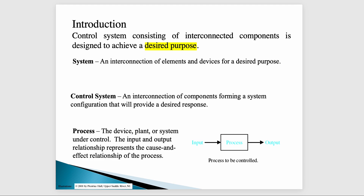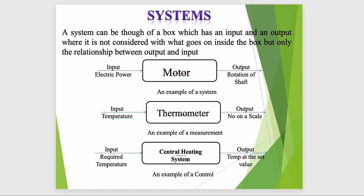The control system is the interconnection of components forming a system configuration that provides us a desired response. To achieve our desired response, we use the control system. The control system has two types: one is the open loop control system, and the second is the closed loop control system.